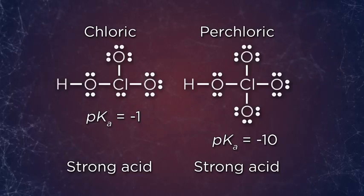Another way to think of this is, again, to consider the stability of the conjugate bases that form. With each progressive addition of oxygen, the conjugate bases of these oxyacids have less and less localized negative charge. It's instead distributed over progressively more and more chlorine-oxygen bond dipoles. And as we already know, distributing charge leads to greater stability.